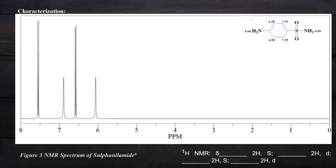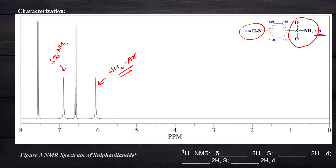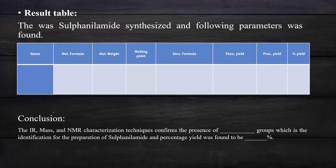For NMR characterization: the NH2 directly attached to the ring will appear at a relatively upfield position (around 6.06 ppm as a singlet). The other NH2 attached to SO2 will appear more downfield (around 6.89 ppm). The peak at 6.58 ppm corresponds to two hydrogens shifted downfield due to the electron-withdrawing sulfonyl group. These two singlet peaks confirm the structural assignment.